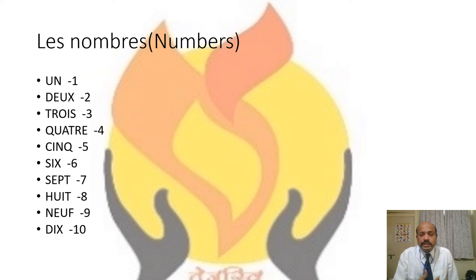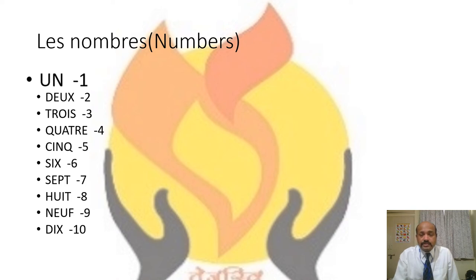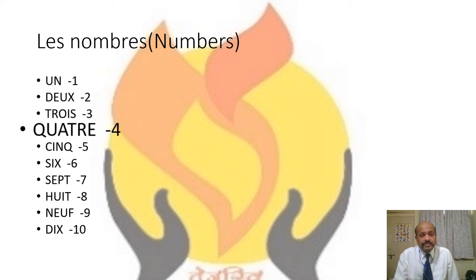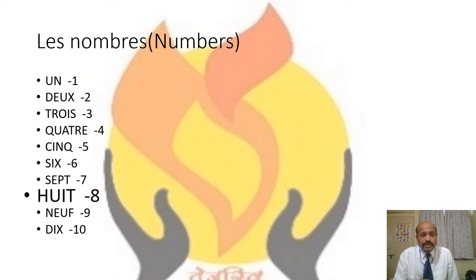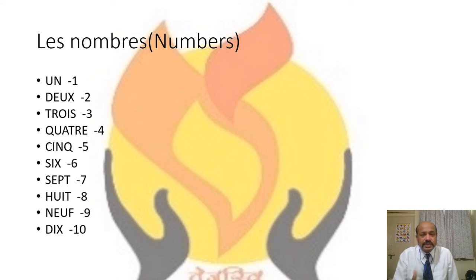Les nombres — Numbers. In this first lesson, we are learning 1 to 20. The basic numbers in French: un, deux, trois, quatre, cinq, six, sept, huit, neuf, dix. Those are the basic numbers — les nombres.